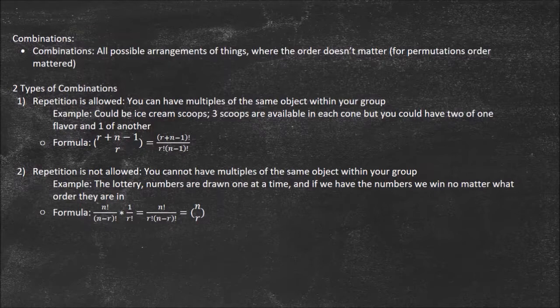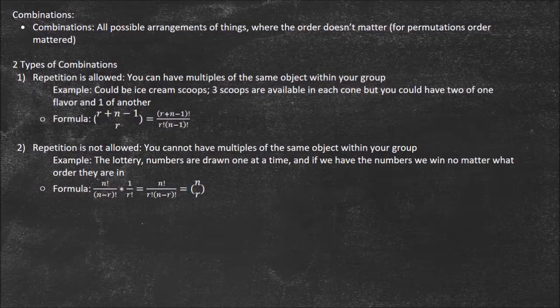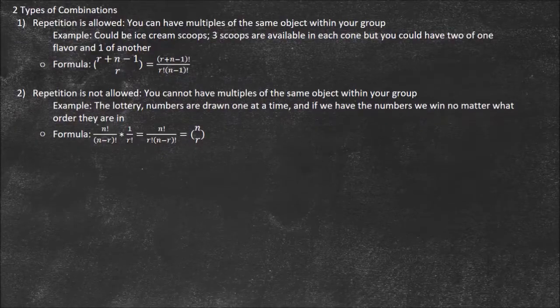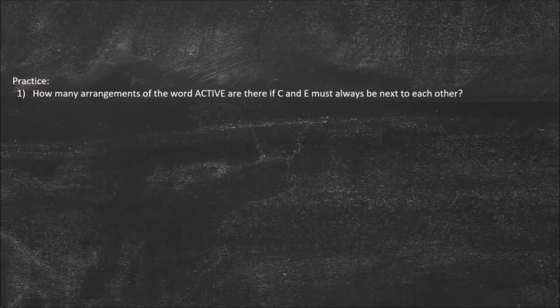Repetition is not allowed are the common types of combinations. That's just n choose r, and it's n factorial divided by n minus r factorial times r factorial. These are formulas you need to memorize. Now we're going to do some practice problems.